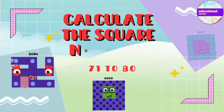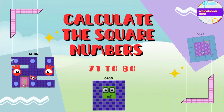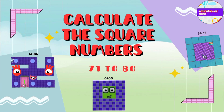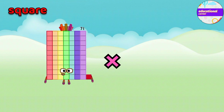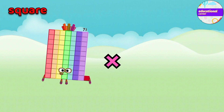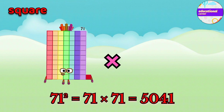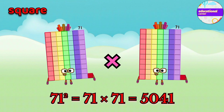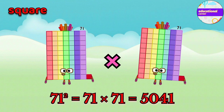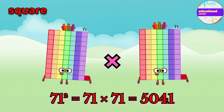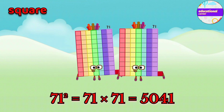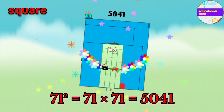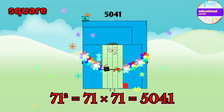Let's calculate the square numbers, 71 to 80. 71 multiply by 71. The square of 71 is 5041.